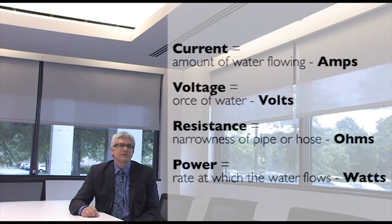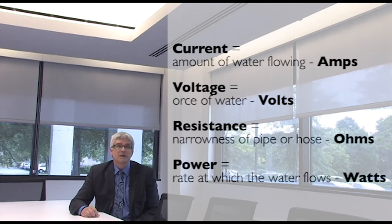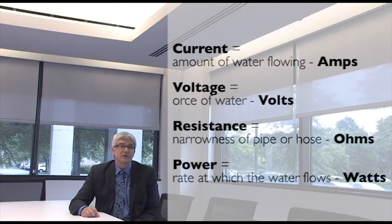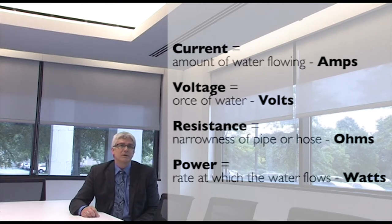In summation: the current, which is similar to the amount of water flowing, is measured in amps. Voltage, which is similar to the force of the water, is measured in volts. Resistance, which is the narrowness of the pipe or our sprinkler, is measured in ohms. The power is the rate at which the water flows, and that's measured in watts.